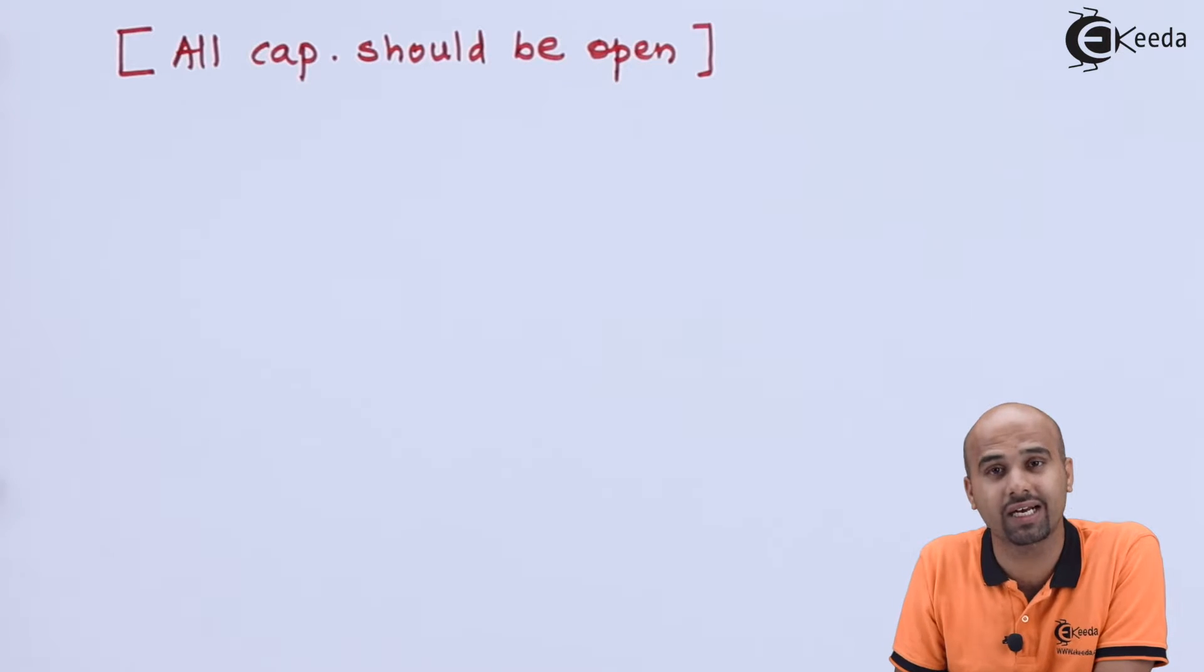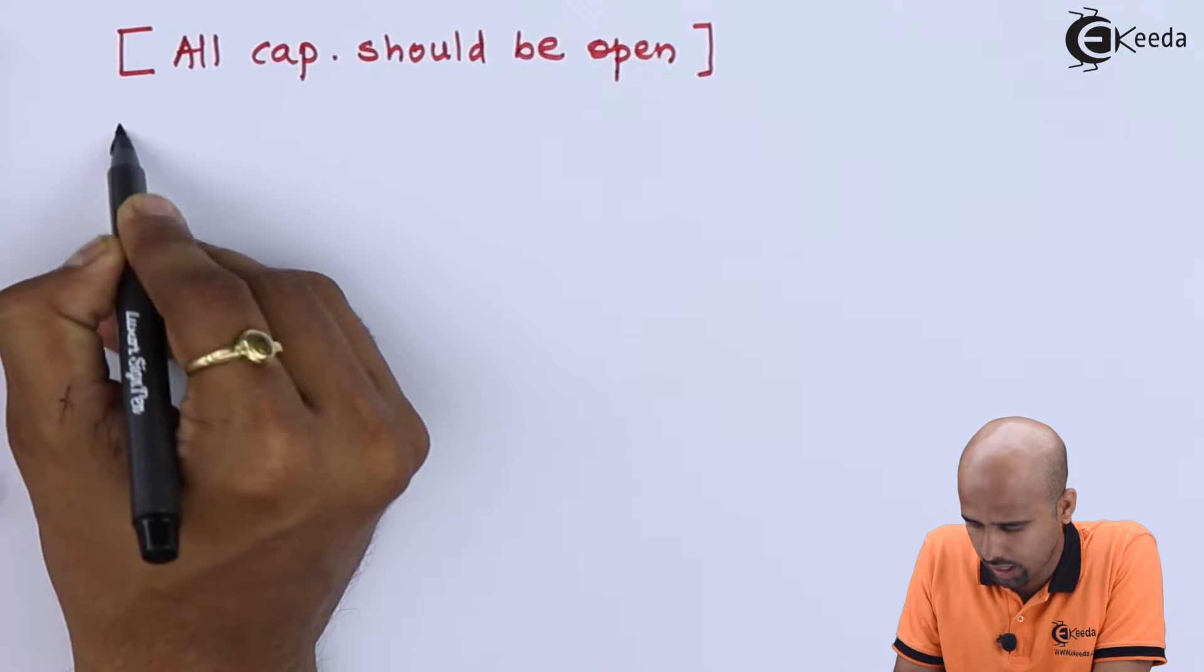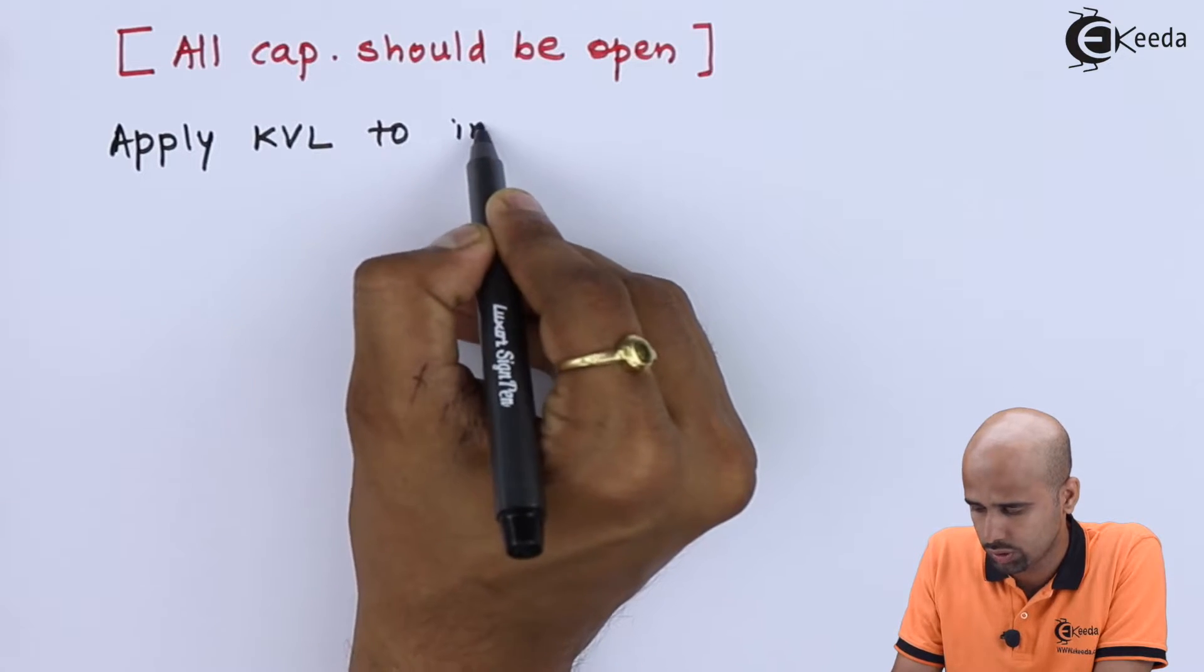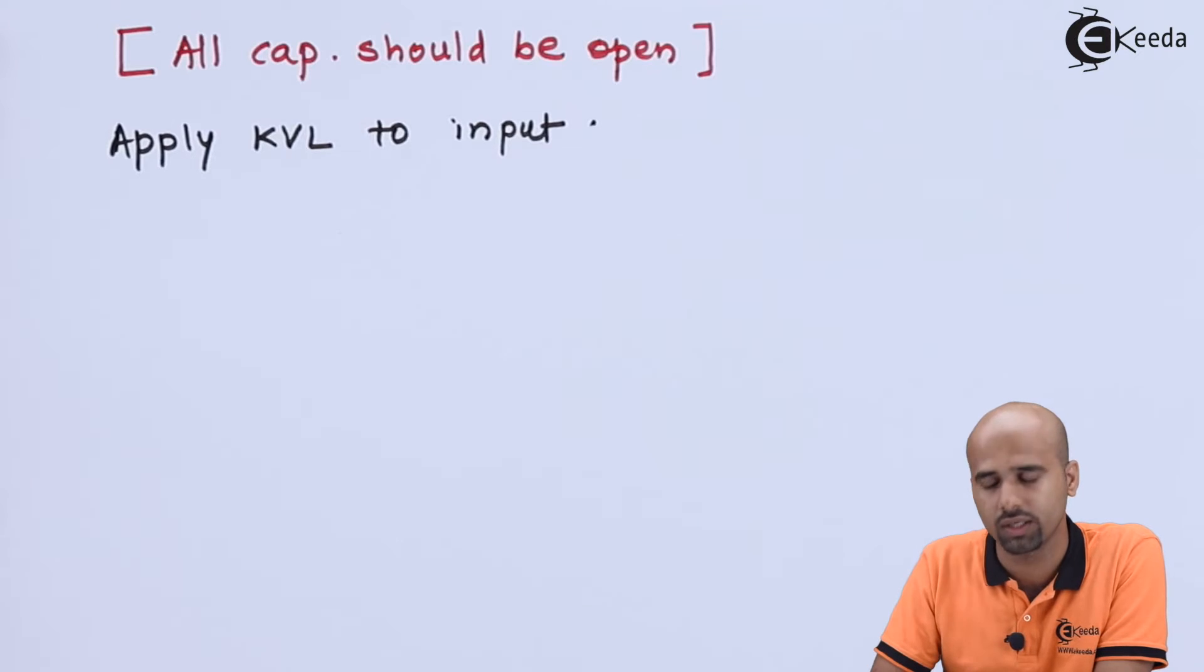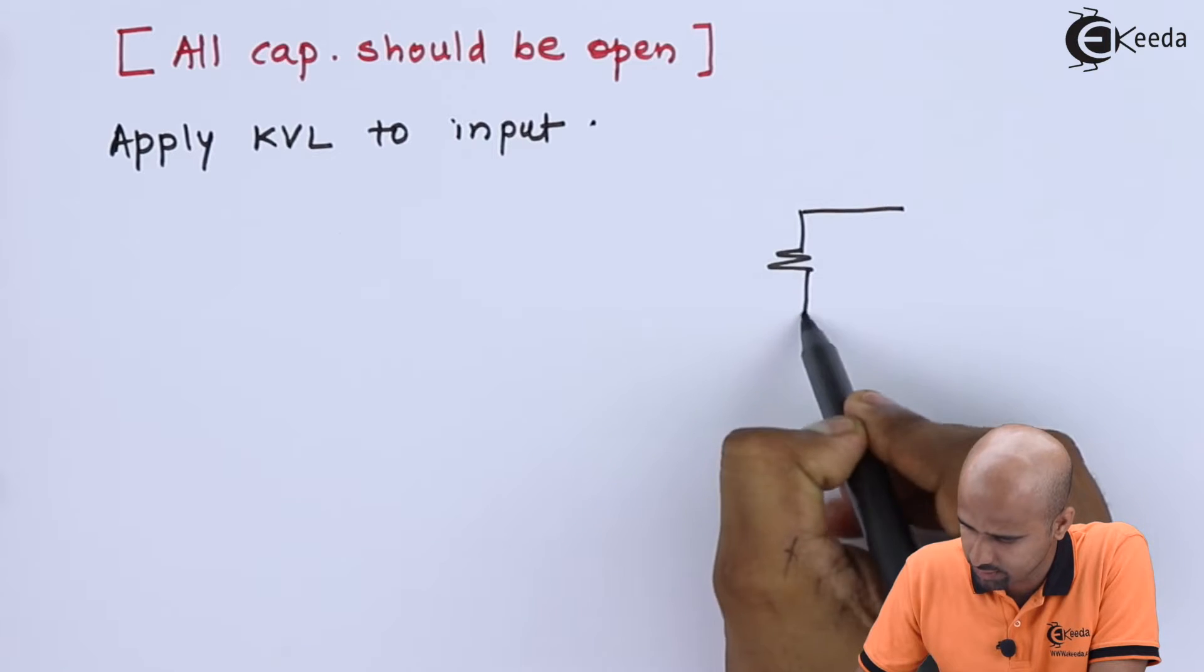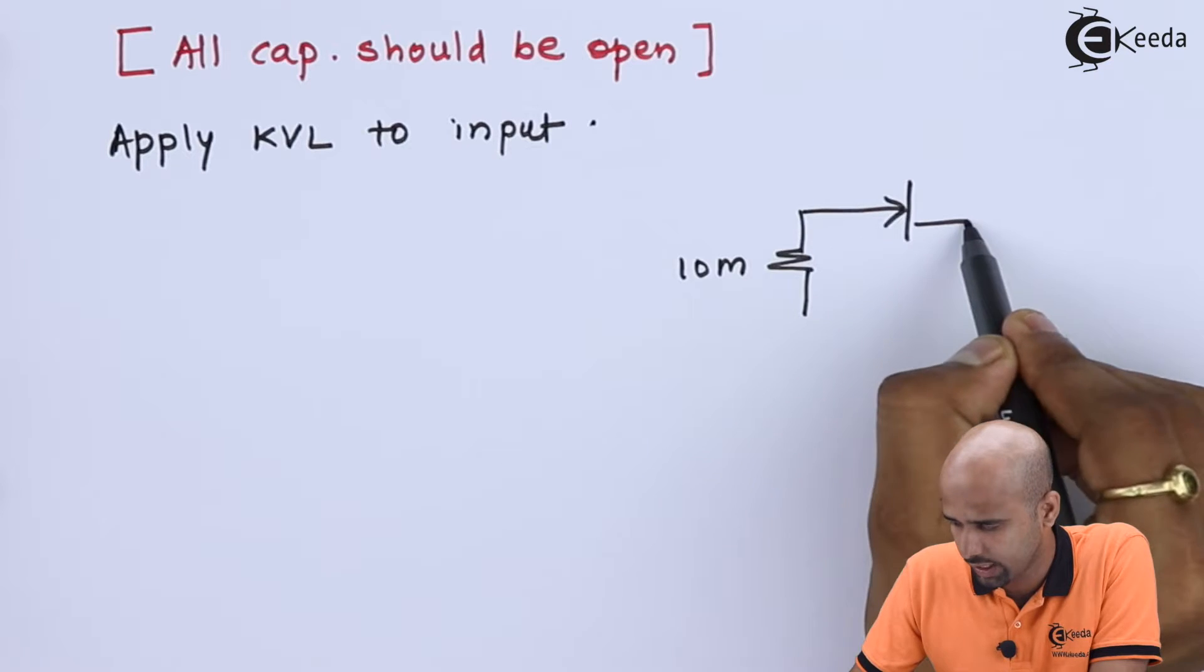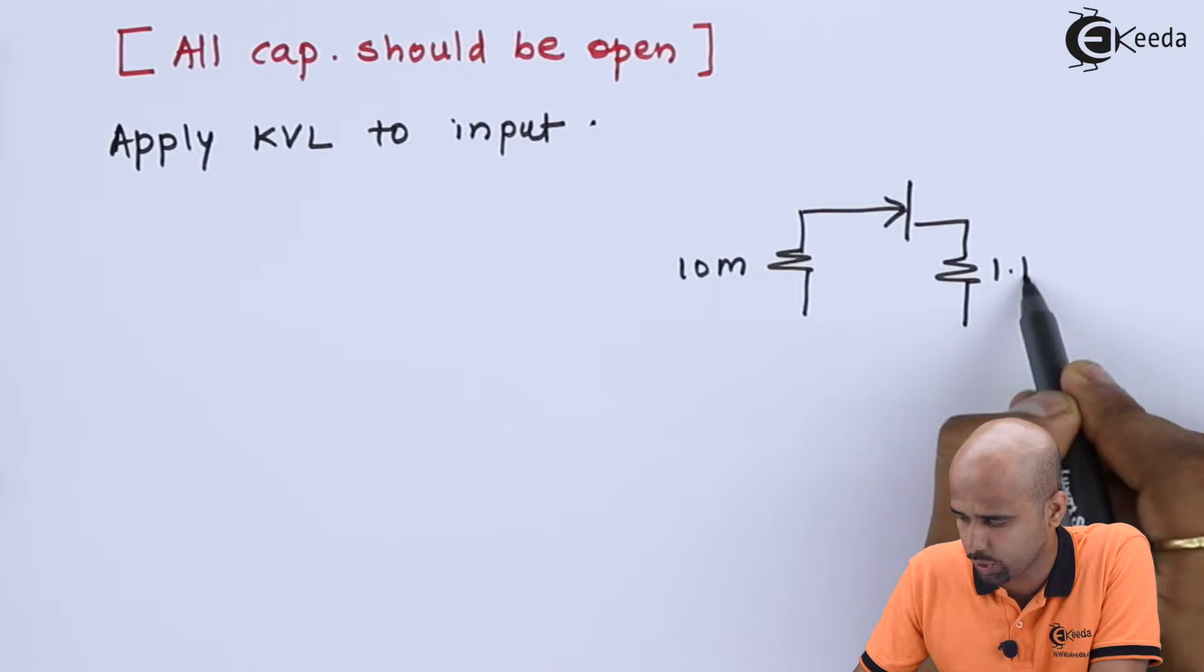Now we will start the analysis with the input KVL. Apply KVL to input. We will redraw for this circuit here. This is the 10 megaohm. This is the FET and here we will be getting source, that is 1.1 kilo.